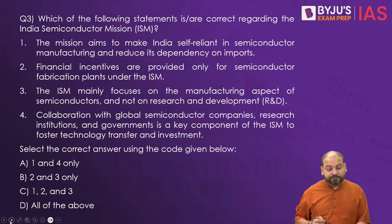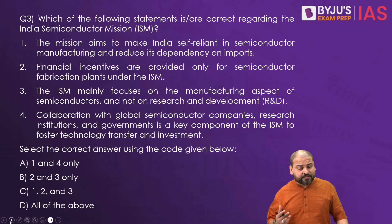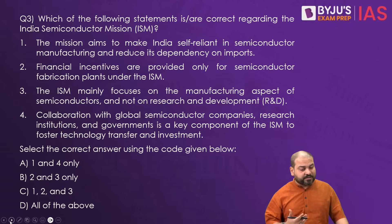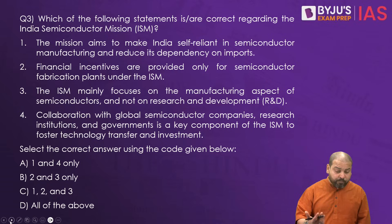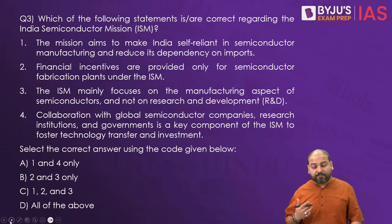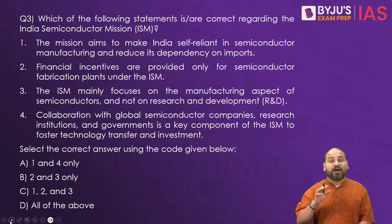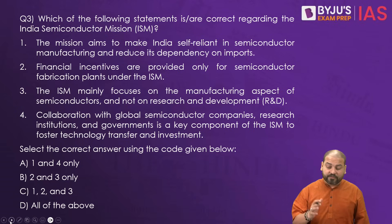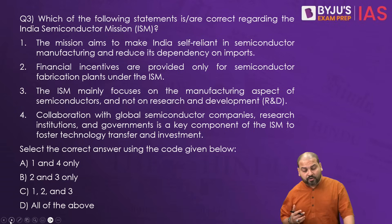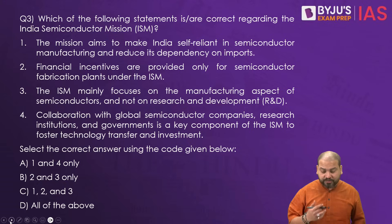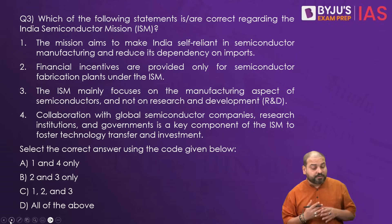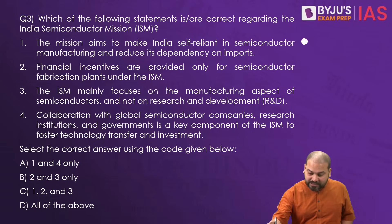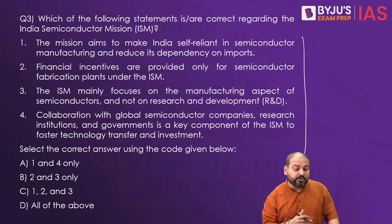Moving ahead to the third question: which of the following statements are correct regarding India's Semiconductor Mission? First, the mission aims to make India self-reliant in semiconductor manufacturing and reduce its dependency on imports. Point two, financial incentives are provided only for semiconductor fabrication plants under the ISM. Third, the ISM mainly focuses on the manufacturing aspect of semiconductors and not on research and development. And fourth, collaboration with global semiconductor companies, research institutions, and governments is a key component of the ISM to foster technology transfer and investment. For these types of questions, if you know, you know — otherwise you need to find some clues.